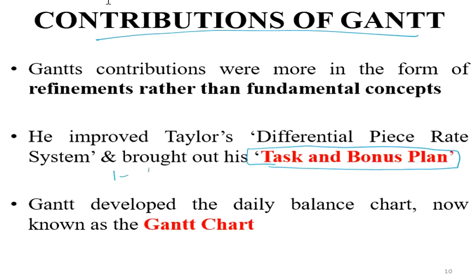Taylor's concept was about the differential piece rate system — one piece at a set rate. But Henry Gantt brought another contribution: the task and bonus plan. That means you attain a set task, and before that, you get a bonus for doing the work.